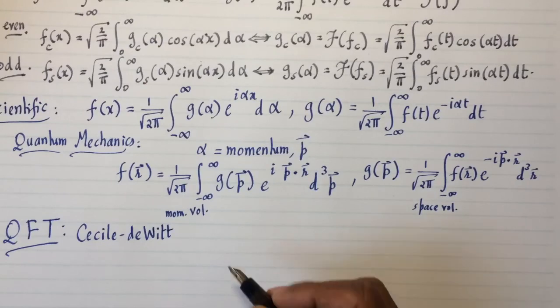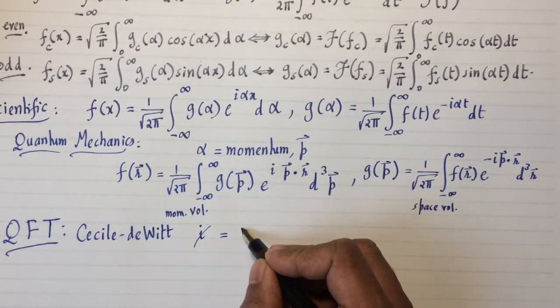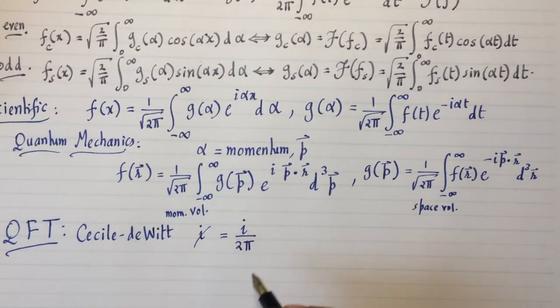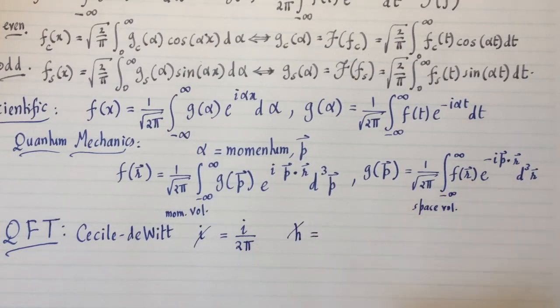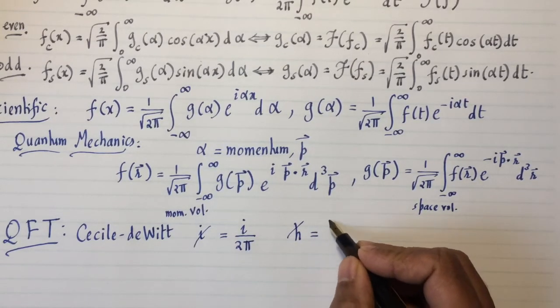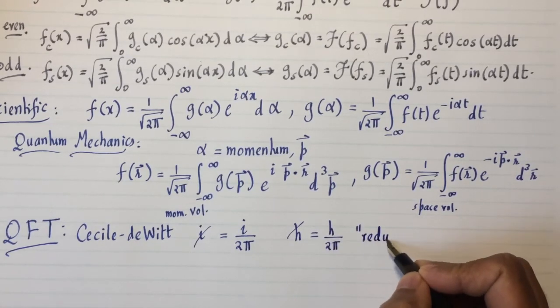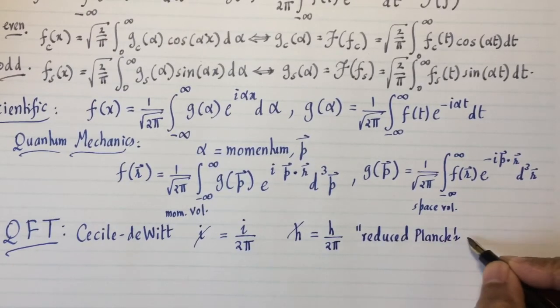And she actually invented the following symbol known as i slash. It's a great joke in physics. It reveals a great sense of humor to come up with something like this. This comes from the traditional h bar in quantum mechanics, which is sometimes called the reduced Planck constant.